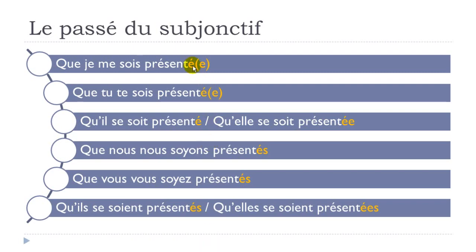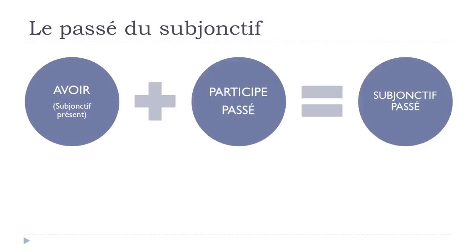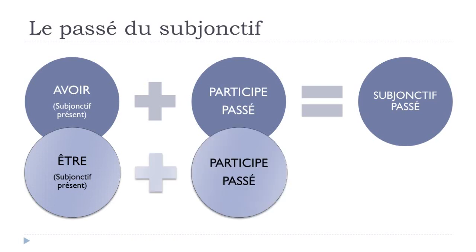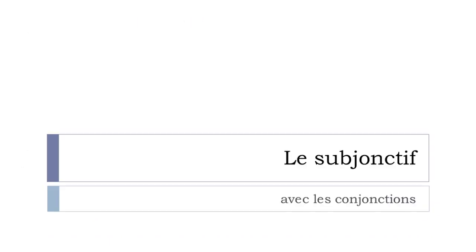To summarize: for the passé du subjonctif, first put avoir at the subjonctif présent, then your participe passé. For the exceptions, use être at the subjonctif présent, then the participe passé. Now we move to: le subjonctif avec les conjonctions — one of several videos regarding le subjonctif.